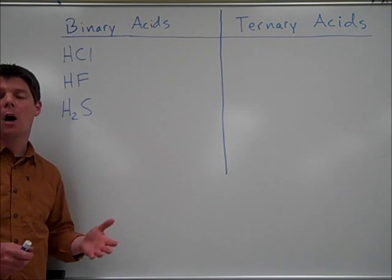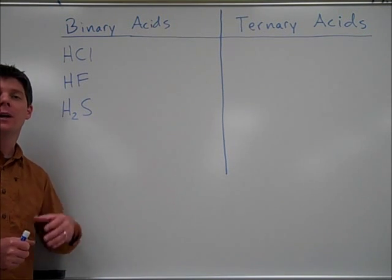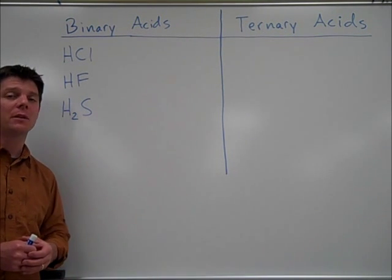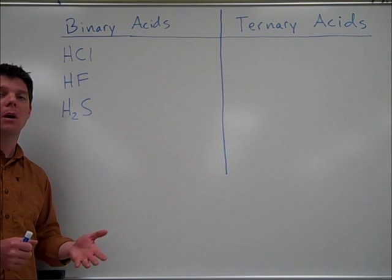The names for binary acids will always begin with the prefix hydro. The ending for the name of the acid is going to come from the second element that's part of this acid.